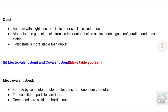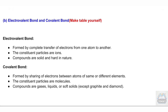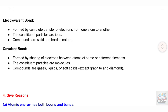B. Electrovalent Bond and Covalent Bond — make a table. Electrovalent bond: formed by complete transfer of electrons from one atom to another; the constituent particles are ions; compounds are solid and hard in nature. Covalent bond: formed by sharing of electrons between atoms of same or different elements; the constituent particles are molecules; compounds are gases, liquids, or soft solids, except graphite and diamond.